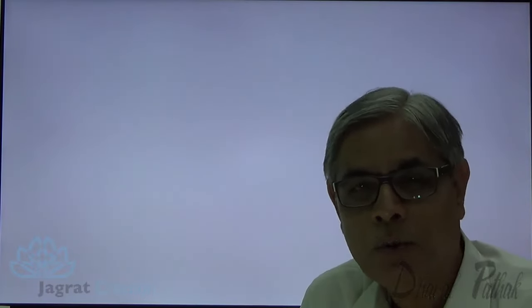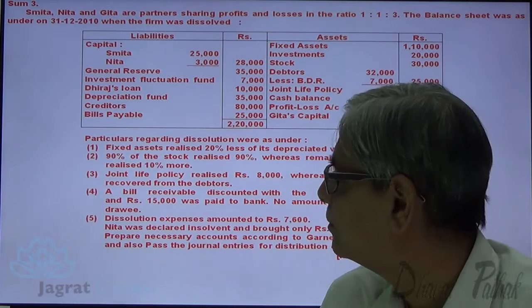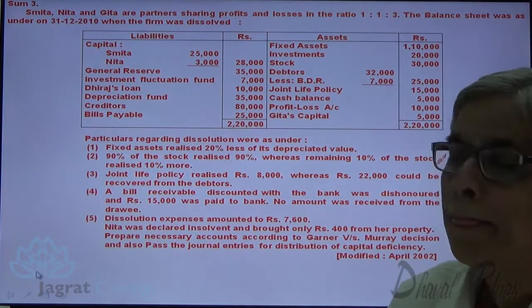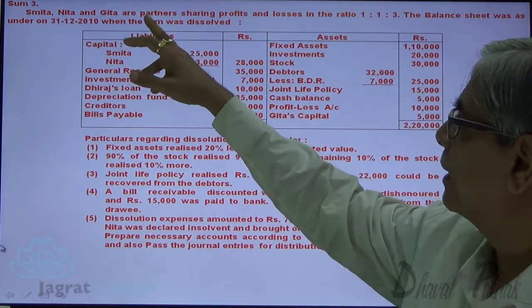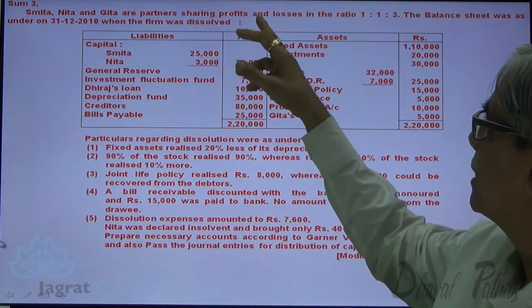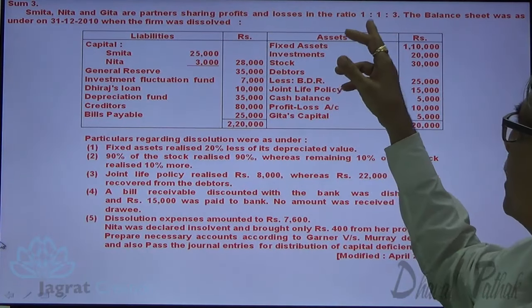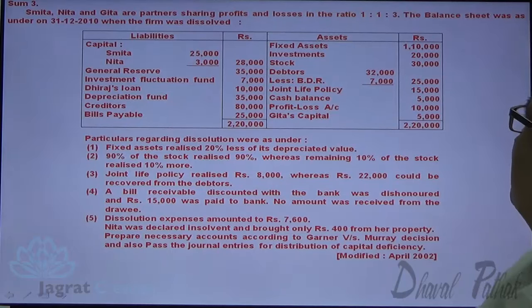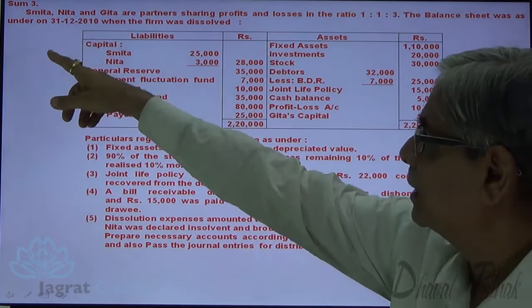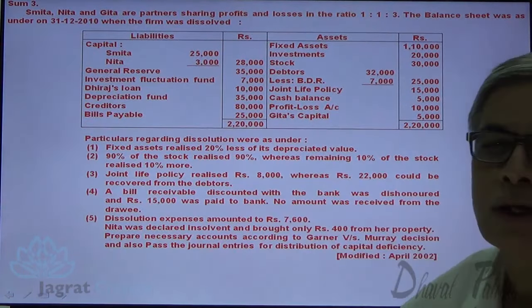I want to start with one sum on dissolution of a partnership firm. Look at the sum on the screen. Smita, Nita, and Gita are partners sharing profits and losses in the ratio of 1:1:3. The balance sheet was as on 31st December 2010.